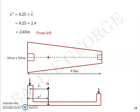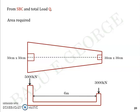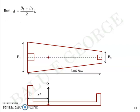The footing must be proportioned so that its centroid is 2.65 meters from the left-hand edge. To find the required area, we use the total load q divided by the safe bearing capacity. Q total is 8000kN and SBC is 400kPa, giving an area required of 20 square meters. Since it is a trapezium, the area is not simply b×L, but rather (b1 + b2)/2 multiplied by L. So 20 square meters equals (b1 + b2)/2 into L — this is Equation 1.